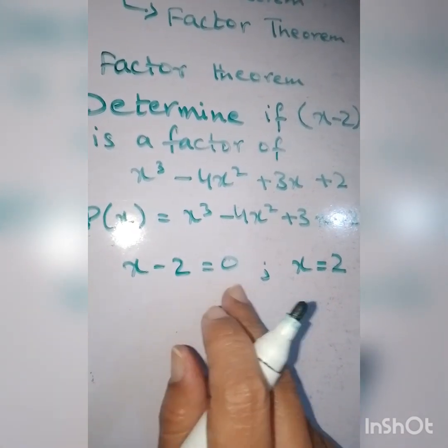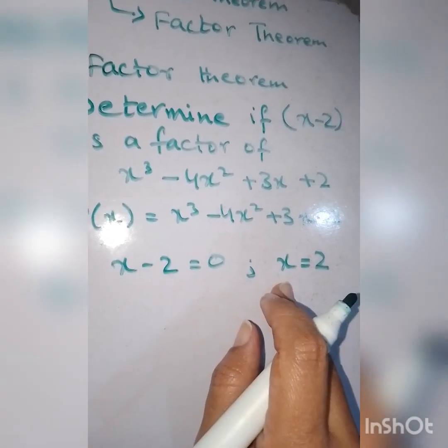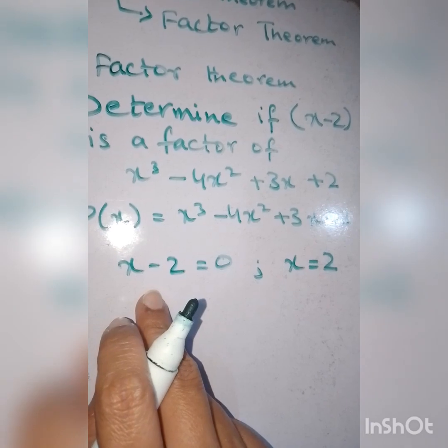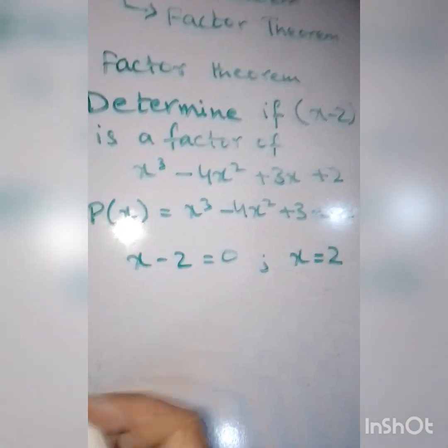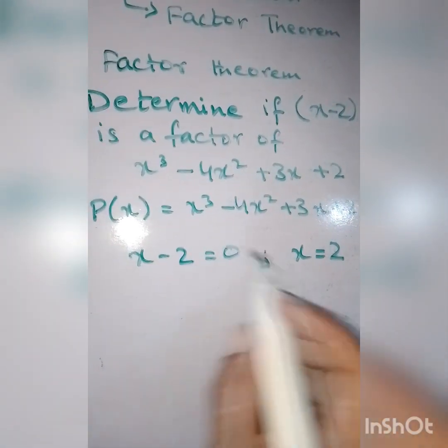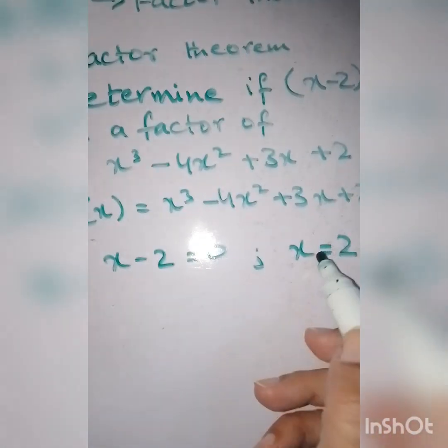Whenever the number is negative, it will be positive on the other side. If it is positive here, we will get x equals minus 2. Here we have positive 2. Wherever there is an x in the polynomial, we are going to substitute this x.